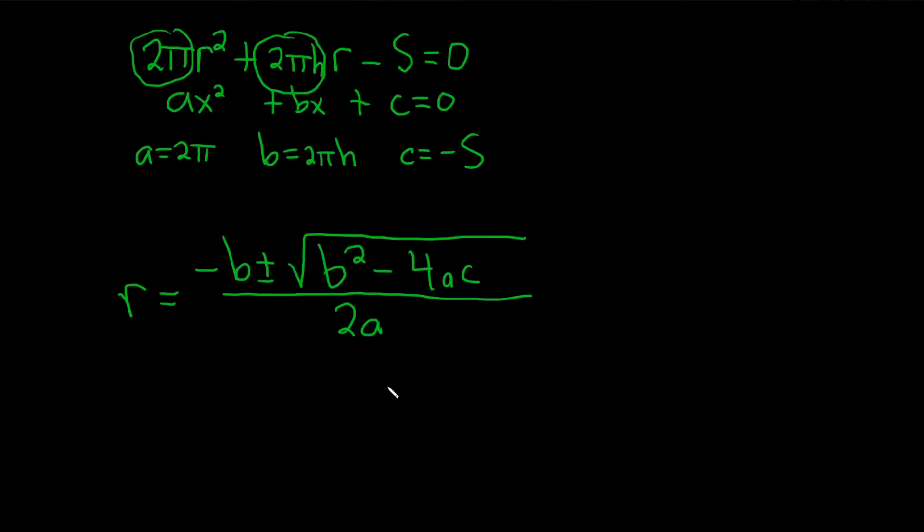Let's plug everything in very carefully here. So r is equal to, let's see, here is b, so b is this 2πh, so this will be negative 2πh,